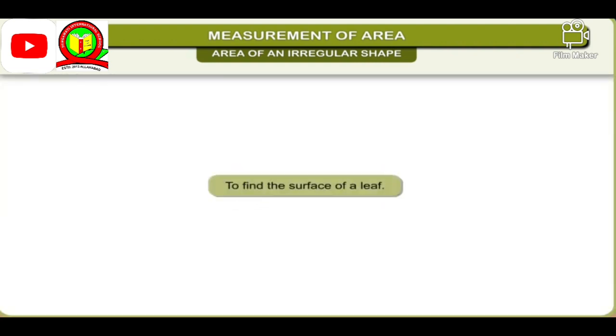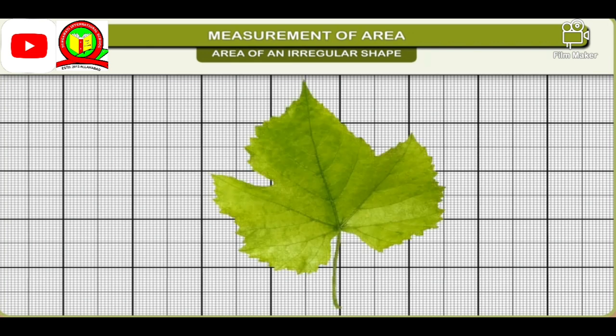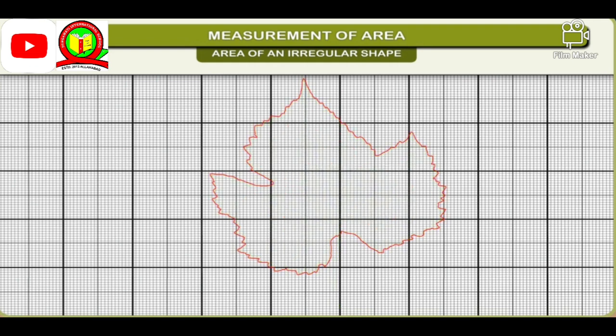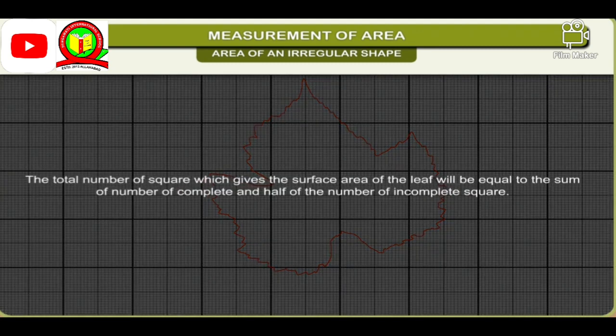Activity: To find the surface area of a leaf. Take a graph paper having a small square area of 1 square millimeter. Place a leaf on the graph paper and draw its outline. Remove the leaf and count the number of complete and incomplete squares. Neglect those squares which are less than half. The total surface area of the leaf will be equal to the sum of the number of complete squares and half of the number of incomplete squares.